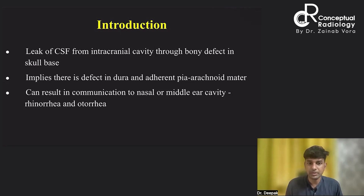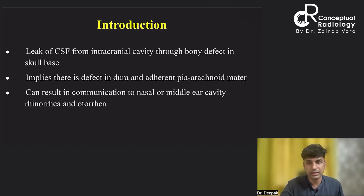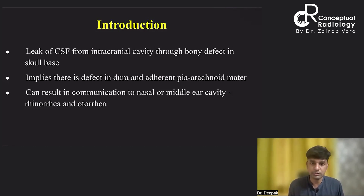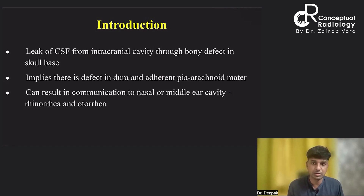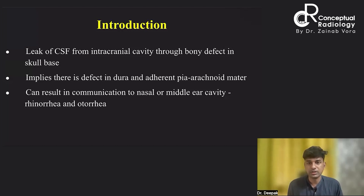Whenever the tympanic membrane is intact, CSF leaking into the middle ear cavity cannot escape through the external auditory canal. Anteriorly, the middle ear cavity has the Eustachian tube. The CSF goes through the Eustachian tube, which is normally closed in physiological states. When fluid builds up, increased pressure causes the Eustachian tube to open, leaking into the nasopharynx — this is called CSF otorhinorrhea.